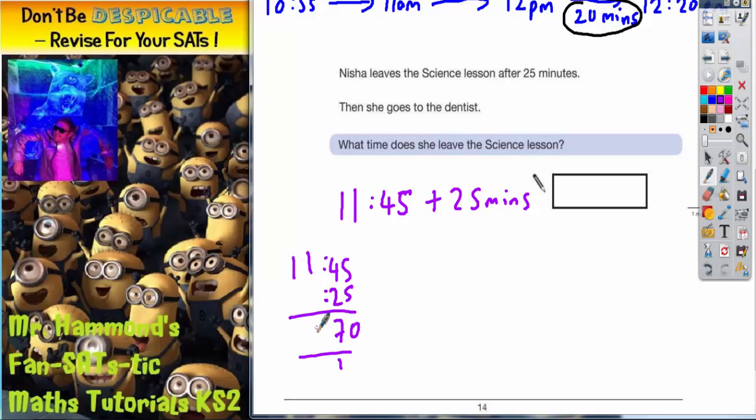1 plus nothing is 1, 1 plus nothing is 1. You're going to get 1170. Now that doesn't make any sense at all because there are only 60 minutes in 1 hour, so 1170 doesn't make any sense.